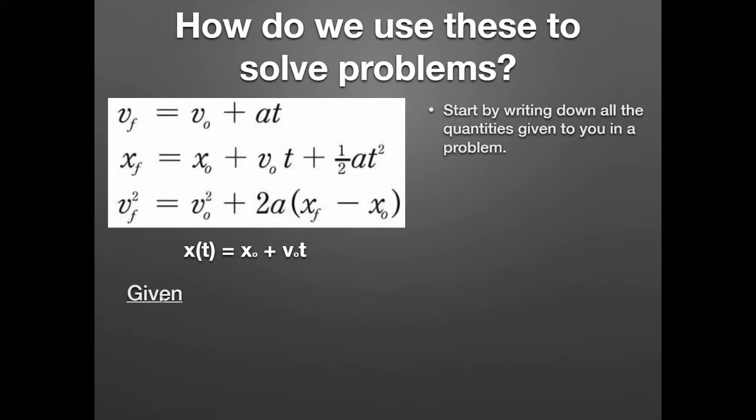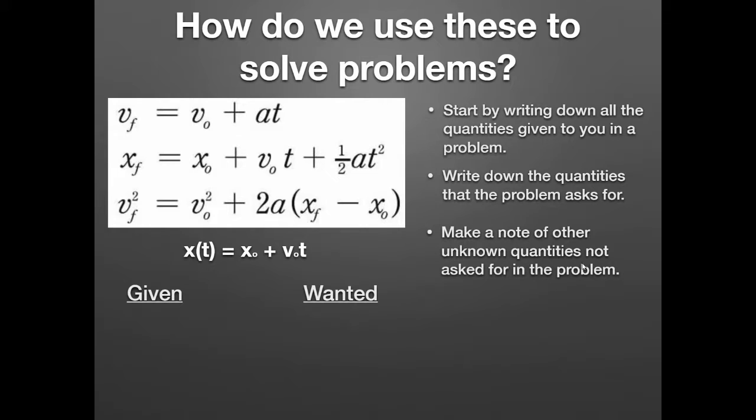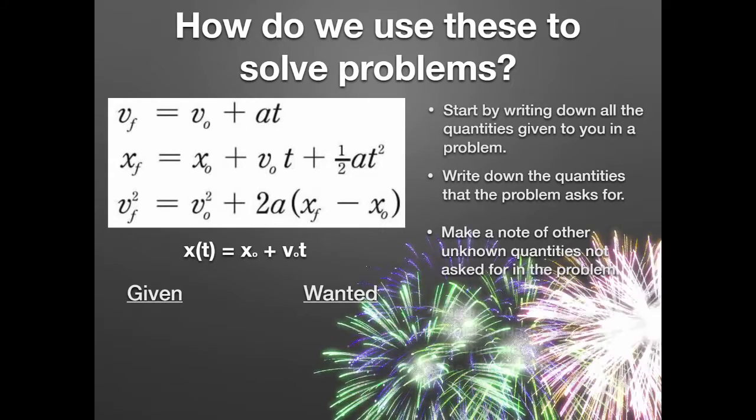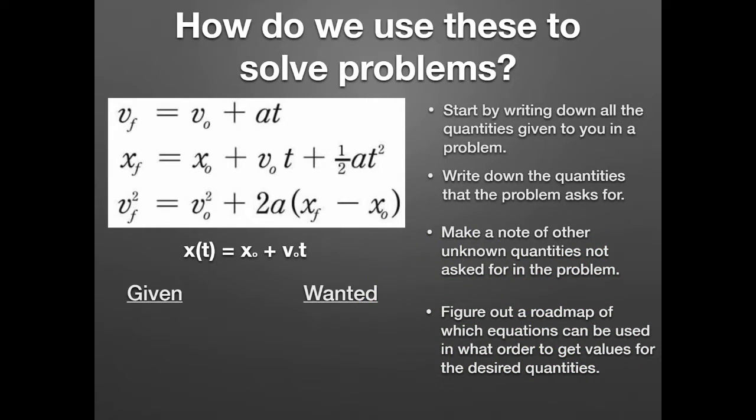You make a list, given or sometimes we say known quantities, and you write down under here all of those quantities and their values with units. Then you write down the quantity, usually just one for the easier problems, but maybe more than one that the problem asks for in another list. And we call that wanted. And I make a note of other unknown quantities not asked for in the problem under this wanted list. I usually circle or box the one that is actually asked for by the problem.